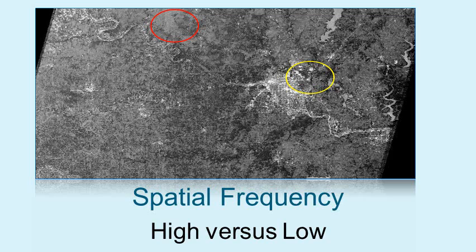The second section, outlined by the red circle, has a lower spatial frequency. Here, the differences between the shades of white, grey, and black are smaller, as are the differences in the underlying brightness values.